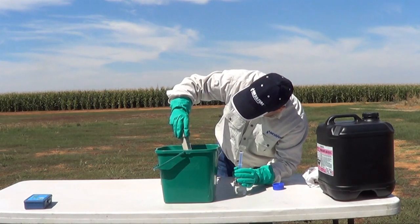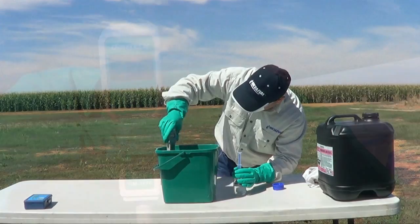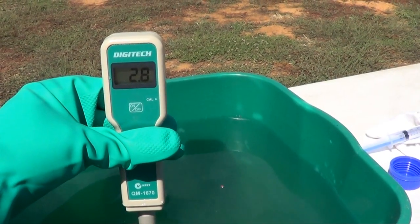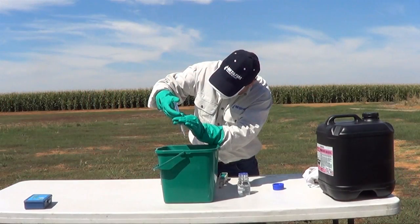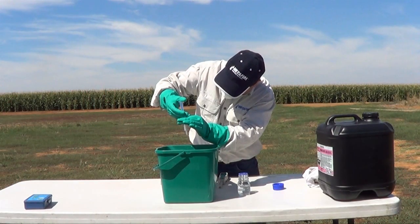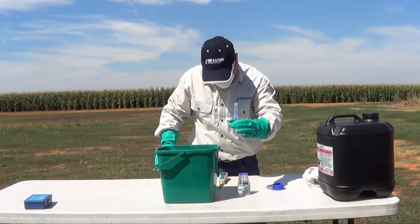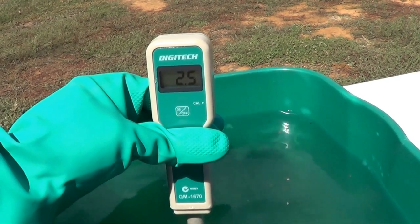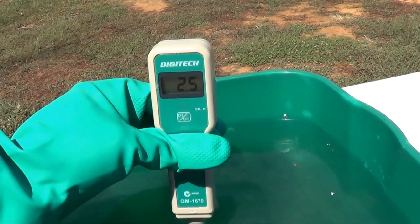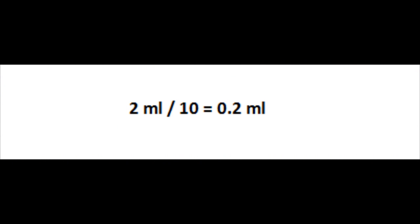Continue to do this until you reach the desired pH level. In this case, we want to get to 2.5. Note how many millilitres it took to get from the initial reading to the desired pH. It took us 2 millilitres, or 0.2 millilitres per litre of water.